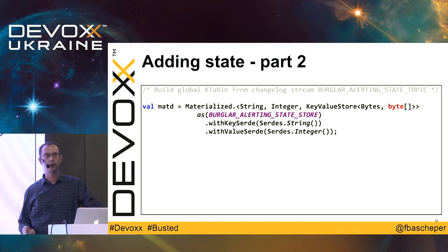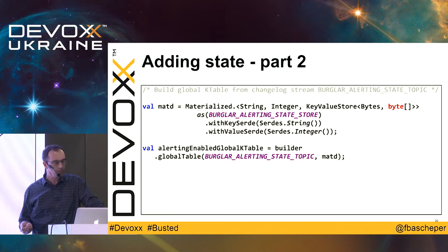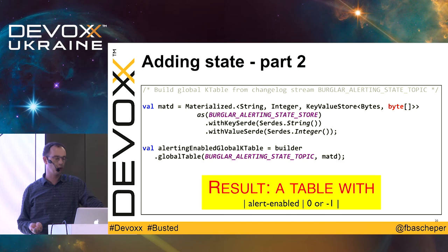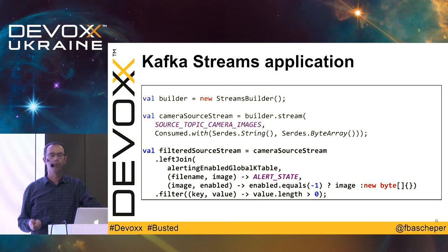I write this out into a new topic, serialized using String and Integer. This gives me the changelog stream with alert-enabled either zero or one, and every minute another event is sent into this stream. Now I can convert this back into a GlobalKTable. For a GlobalKTable you need a materializer — basically a RocksDB database that is replicated across the Kafka Streams cluster and written on the local file system. You say: give me this topic with the changelog stream and use this materializer to save it in. This gives me the global table with either alert-enabled zero or minus one.